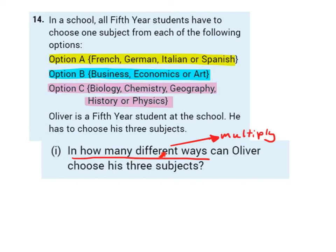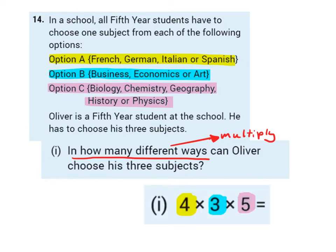Question 1: In how many different ways can Oliver choose his three subjects? When we hear 'in how many different ways,' we want to think multiply. For option A, there are four choices of subject. For option B, there are three choices. And for option C, there are five options. So we're going to multiply 4 by 3 by 5, and four times three times five is 60. There are 60 different ways that he can choose his three subjects.